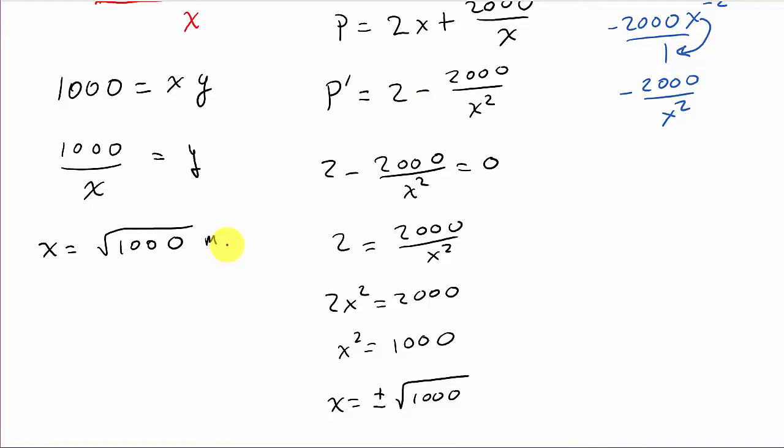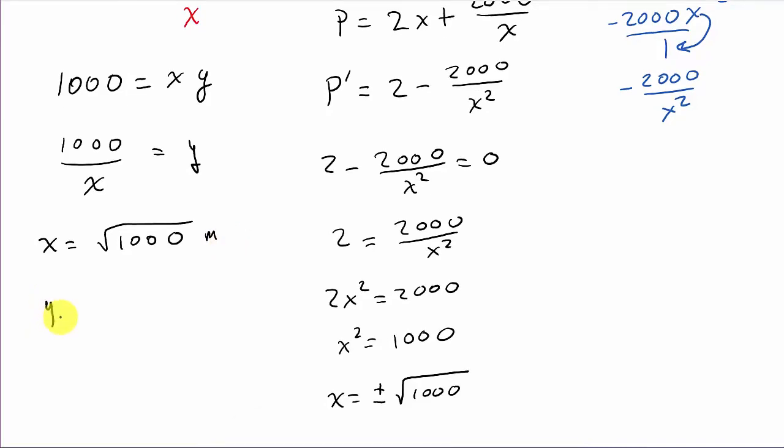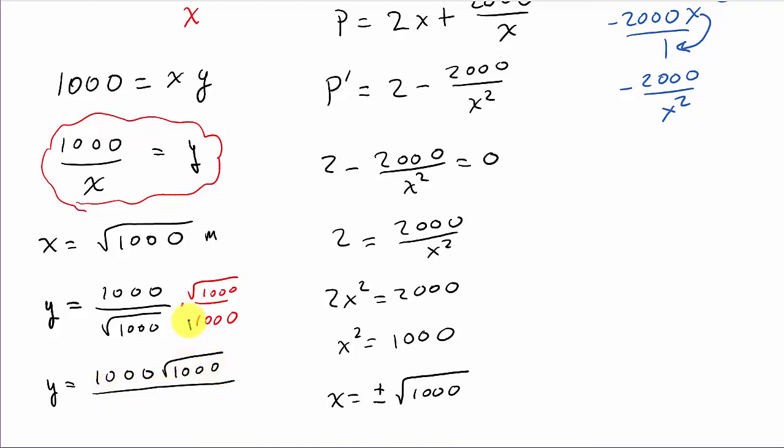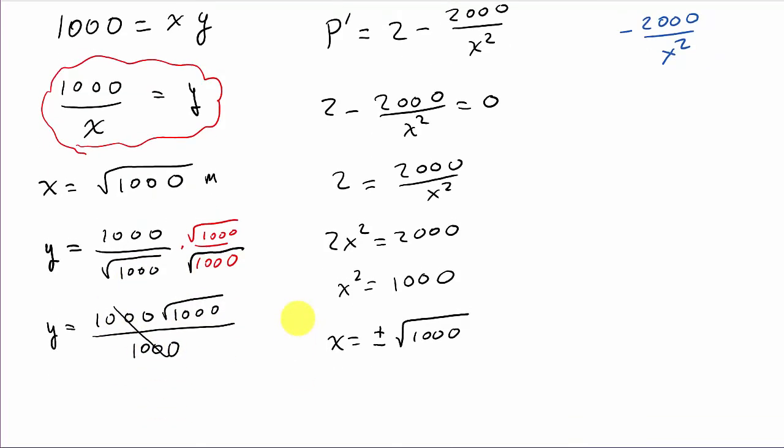Now, we need to know what y is. Well, y is equal to 1000 over x. So, y is equal to 1000 over the square root of 1000. And then, if we rationalize the denominator, we're going to get y is equal to 1000 square root of 1000 over, that should be a square root there too. So, square root of 1000 times square root of 1000 is 1000. The 1000s cancel, and so I'm left with y equals the square root of 1000, and that is meters.